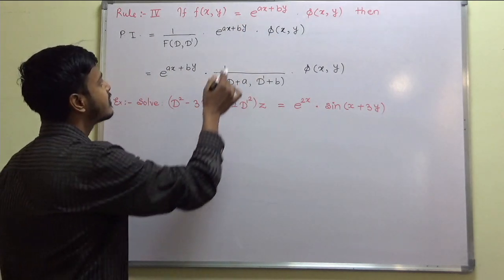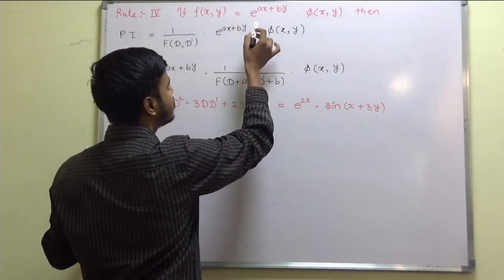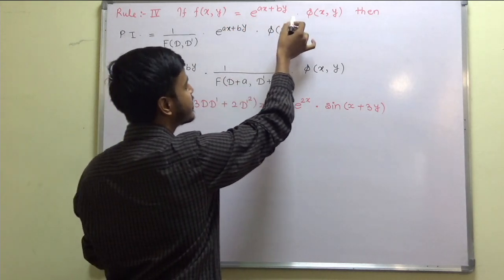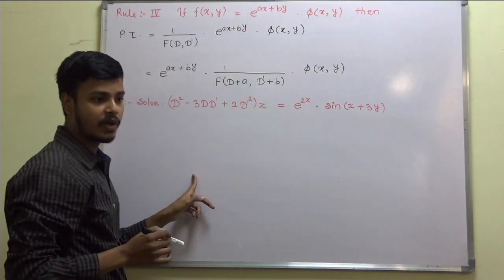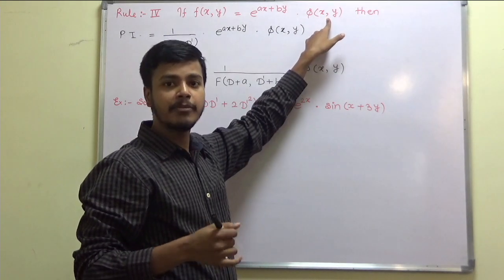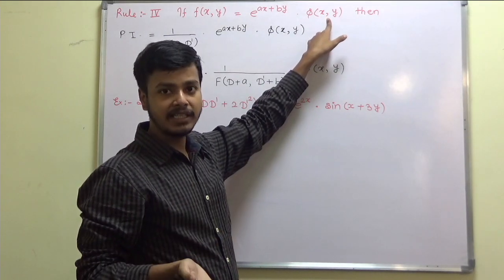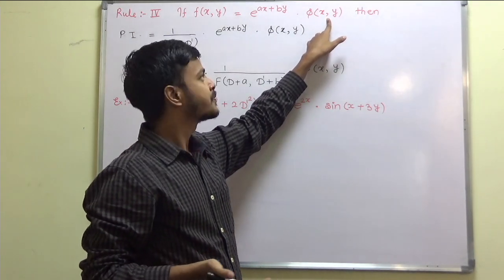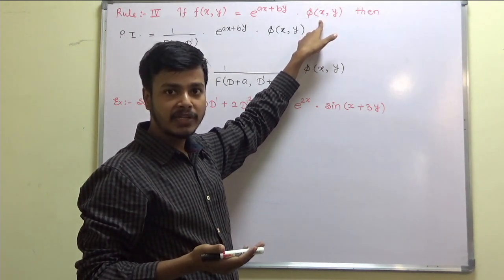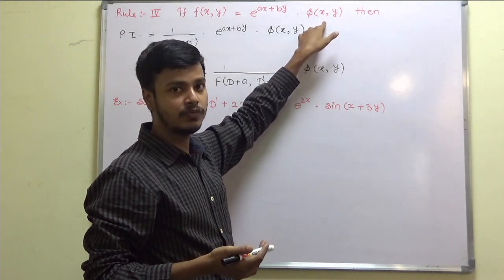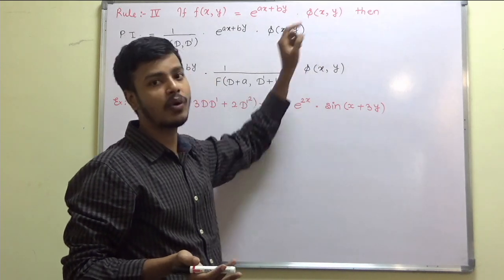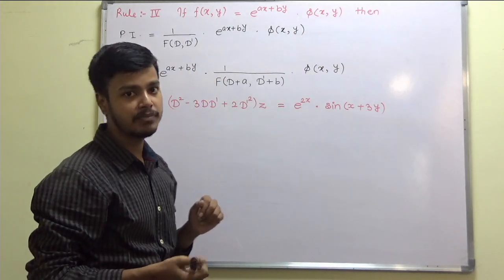Here, what would f(x,y) be? f(x,y) would be e to the power (x + vy) into φ(x,y). This φ(x,y) may be anything — it may be x^m · y^n from rule 3, or a function from rule 2 such as sin(x + vy) or cos(x + vy).